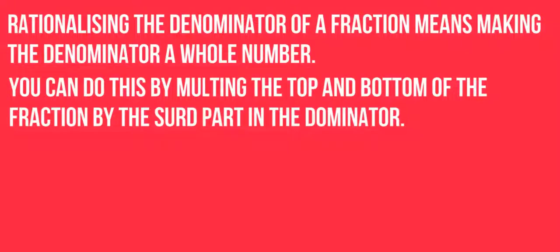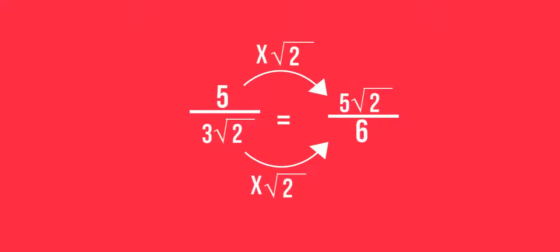Rationalizing the denominator of a fraction means making the denominator a whole number. You can do this by multiplying the top and bottom of the fraction by the surd part in the denominator. Here's an explanation.